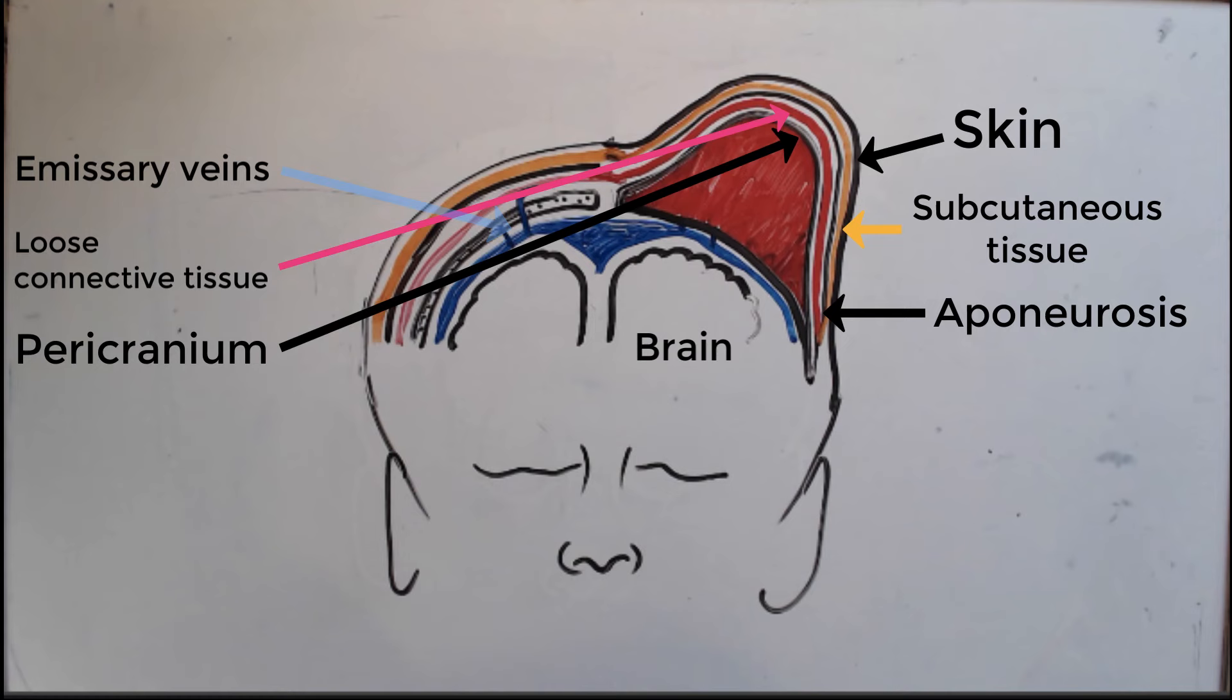Since the bleed is subperiosteal but not underneath the bone, the brain is not affected. The bleed is typically slow and takes two to three days to show up. It may not have been visible at all in the hospital.